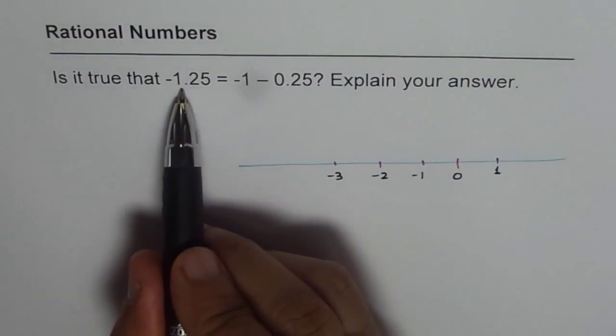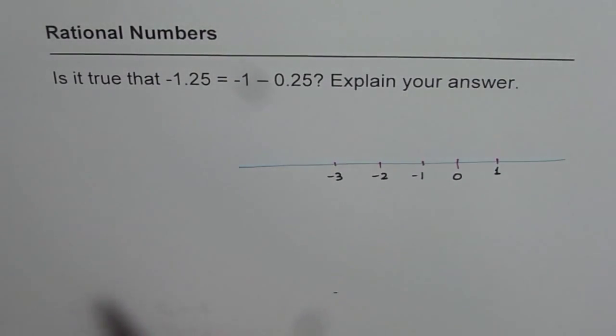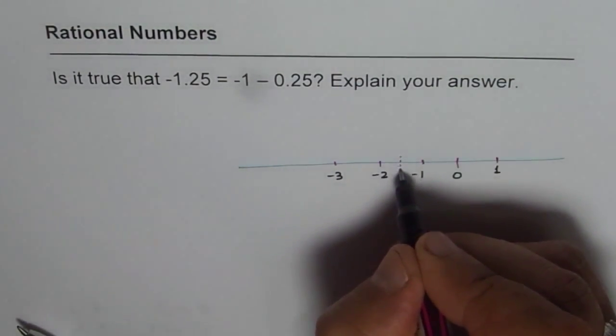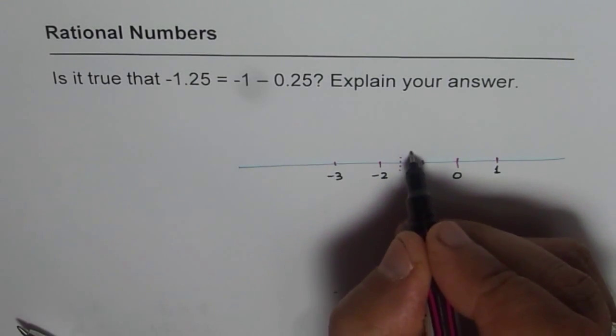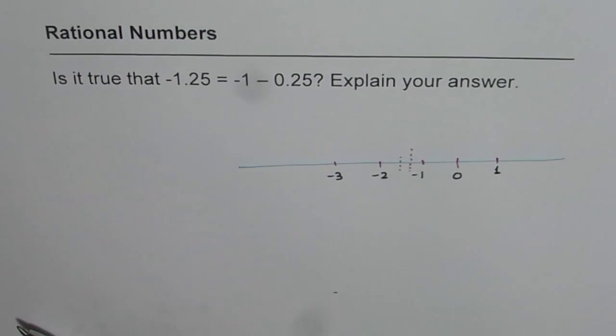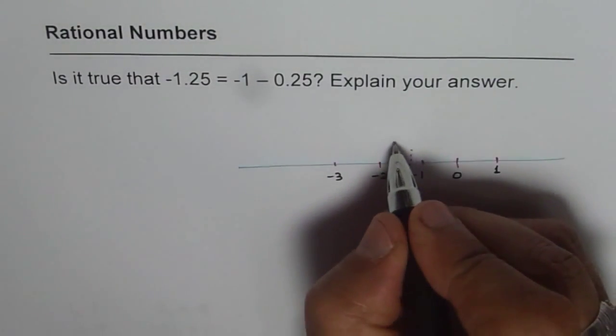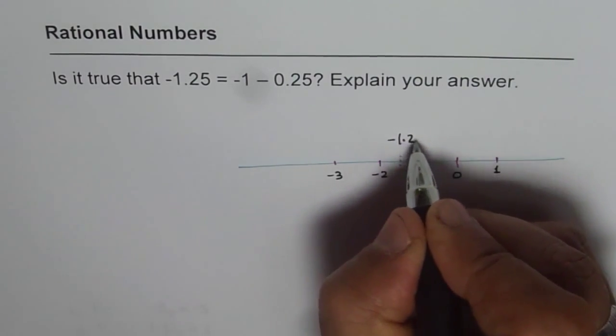Now, what is -1.25? So half is -1.5, and then that is -1.25. Half of half is a quarter, so that is -1.25.